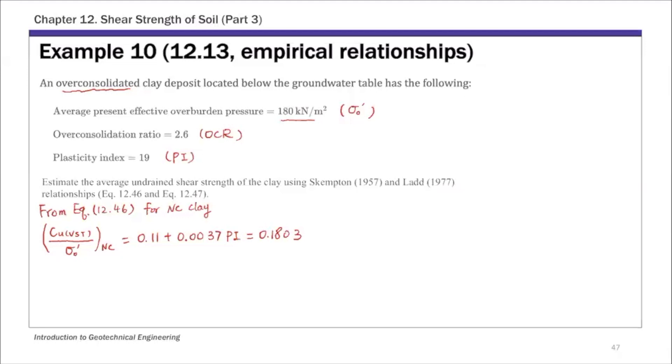And for this deposit, we know it's overconsolidated. So for overconsolidated clay, we have Cu overconsolidated clay using equation 12.47. We have Cu over sigma nought prime for overconsolidated clay, which is OCR to the power 0.8.